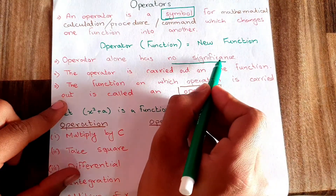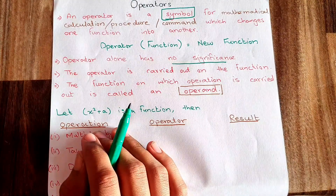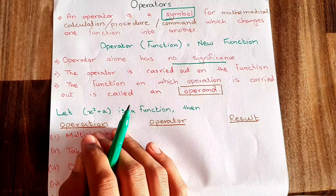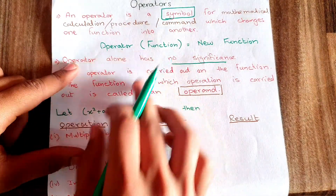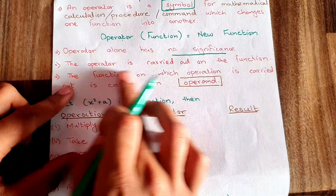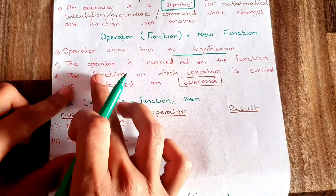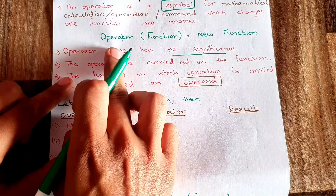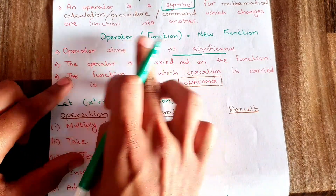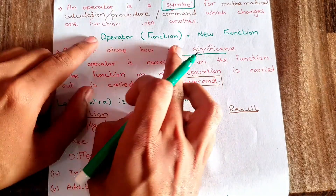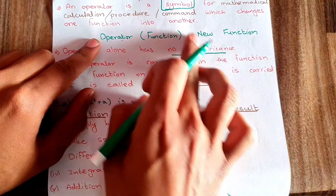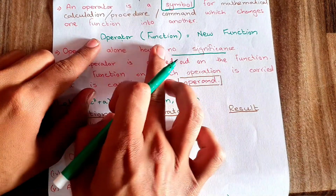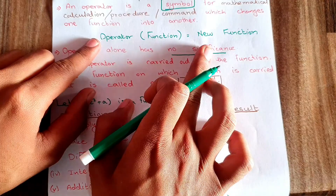Operator is not used alone; it is always applied on a function. The operator is carried out on the function — it is not multiplied with the function. This part of the equation means that the operator is being applied on the function and we are getting a new function as the result.